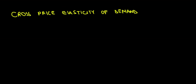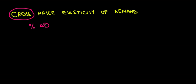Let's work through the concept of cross price elasticity of demand. What does this 'cross' mean? Basically, we're going to speak about two products — namely, how does the change in quantity demanded of good A relate to the change in price of good B.